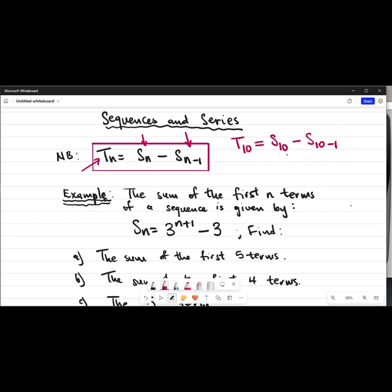So this is a formula that you can use to find any term that you want, even when you know the sum of your terms. Now let's look at an example here.